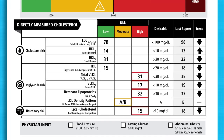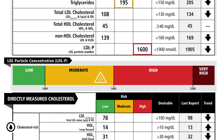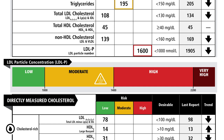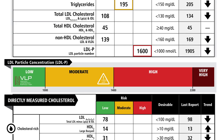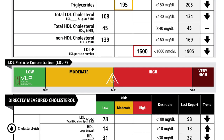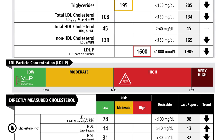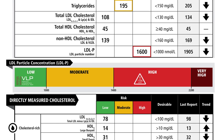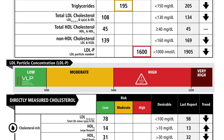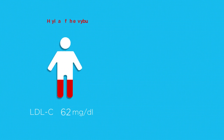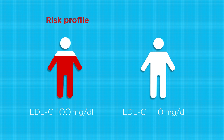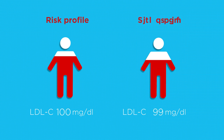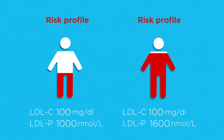VAP Plus also provides a true LDL particle number through its patented Vertical Lipoprotein Particle, or VLP technology, which quantifies a patient's risk by indicating how many particles carry your cholesterol. The higher the particle number, the higher the risk. We know that two patients can have the same LDL cholesterol and yet have very different risk profiles.